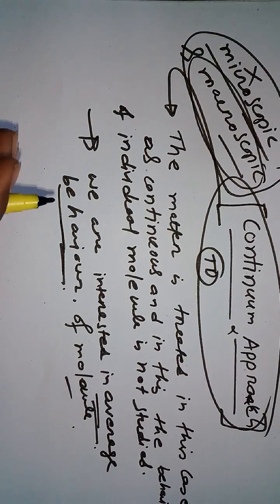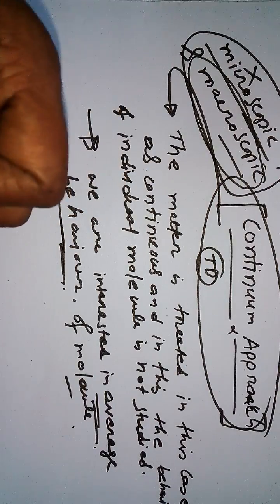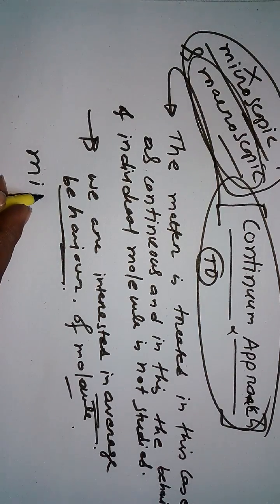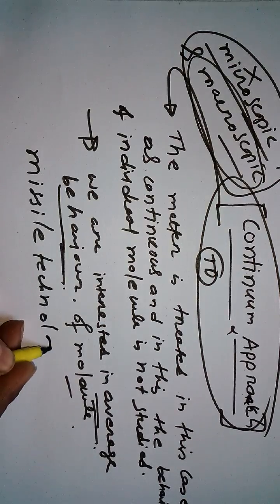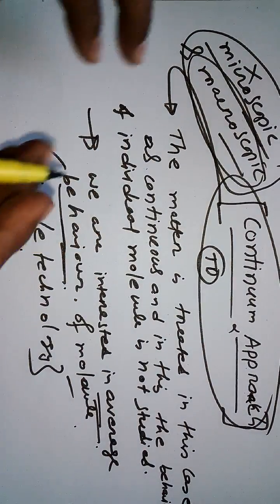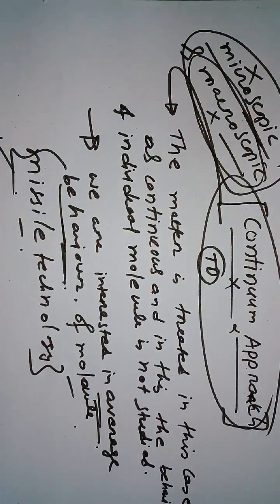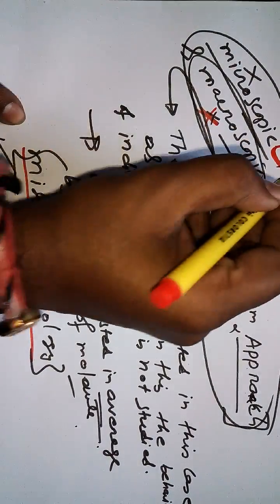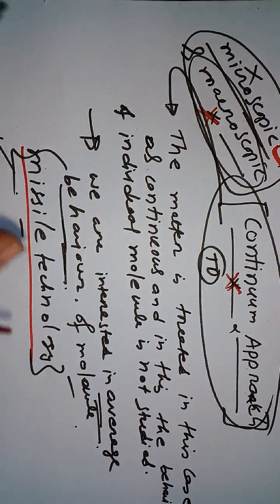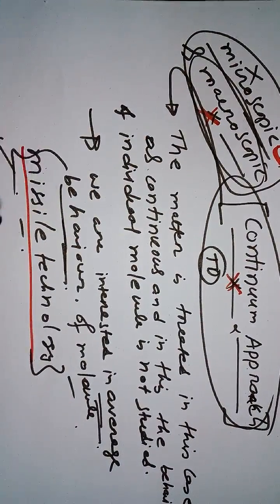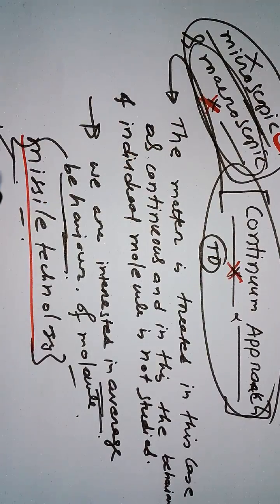Let me share an important example — missile technology or vacuum technology. In the case of missile technology, the continuum approach loses validity. We cannot use the continuum or macroscopic approach in missile technology because those approaches are not valid there. In missile technology, we use the microscopic approach because it requires the capability to analyze things at the molecular level to understand what is going on.